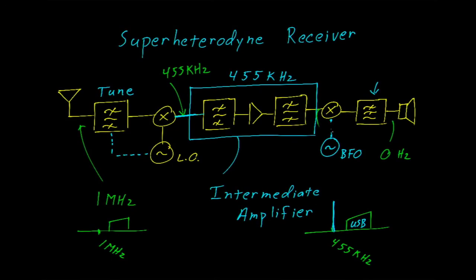Moving back to our superheterodyne receiver — there needs to be a switch for the beat frequency oscillator. If you are in AM mode, turn the BFO off. If you are in upper sideband or lower sideband mode, turn the beat frequency oscillator on. We need that beat frequency oscillator present so the second mixer has something to heterodyne the received signal against, just like we saw on our web receiver. If you're in AM mode with the BFO turned off, you cannot demodulate either an upper sideband or a lower sideband signal.